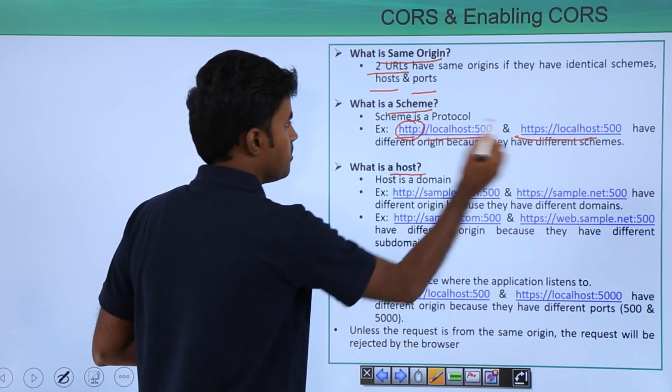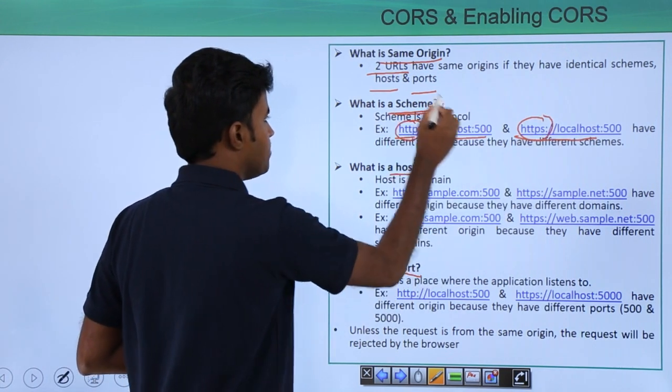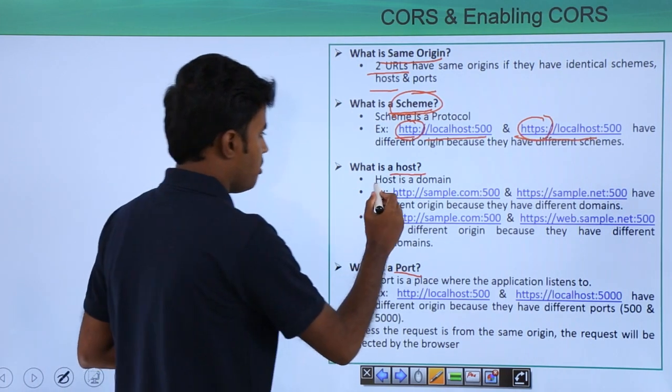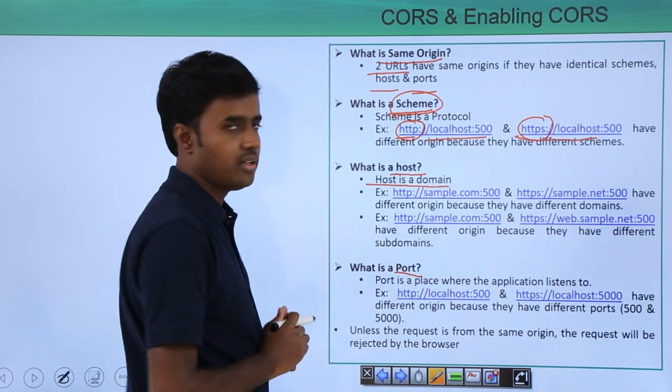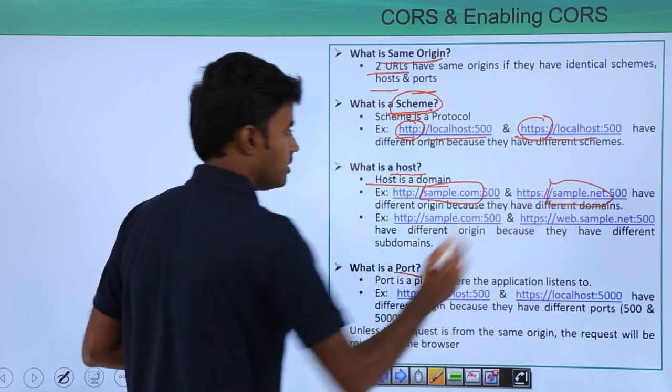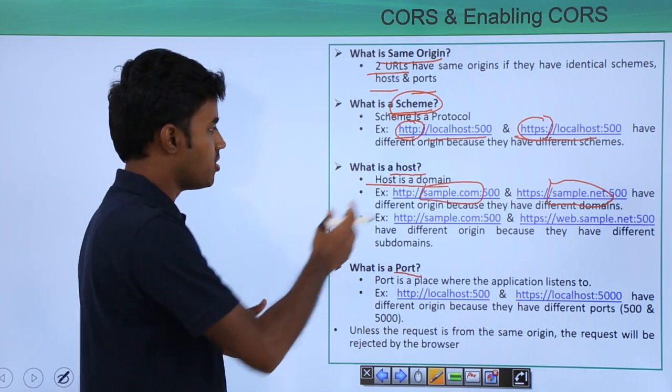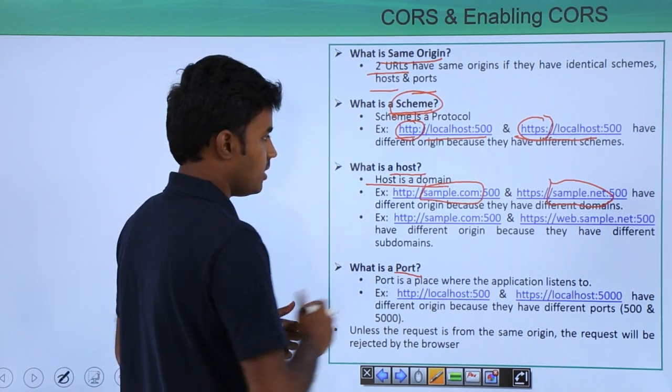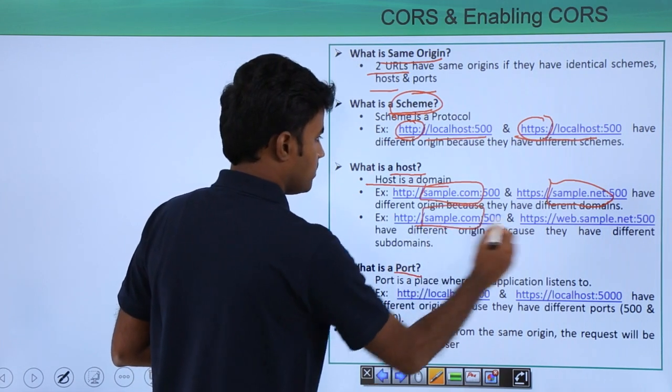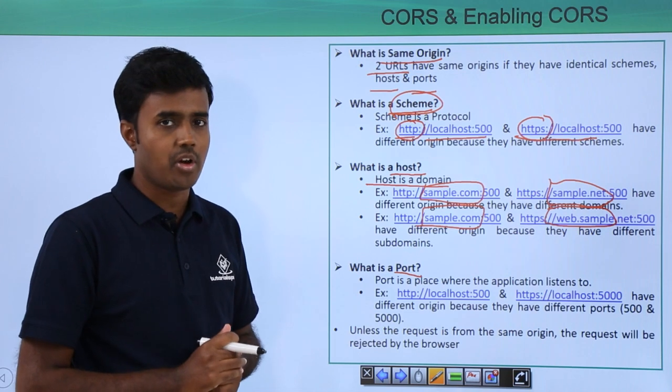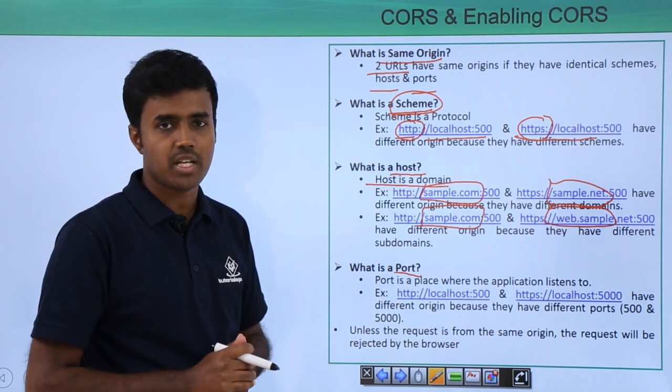And what is a host? A host is nothing but a domain. For example, sample.com and sample.net are different domains because one is .com and the other one is .net. And again, sample.com and web.sample.com have different origin because they have different subdomains.